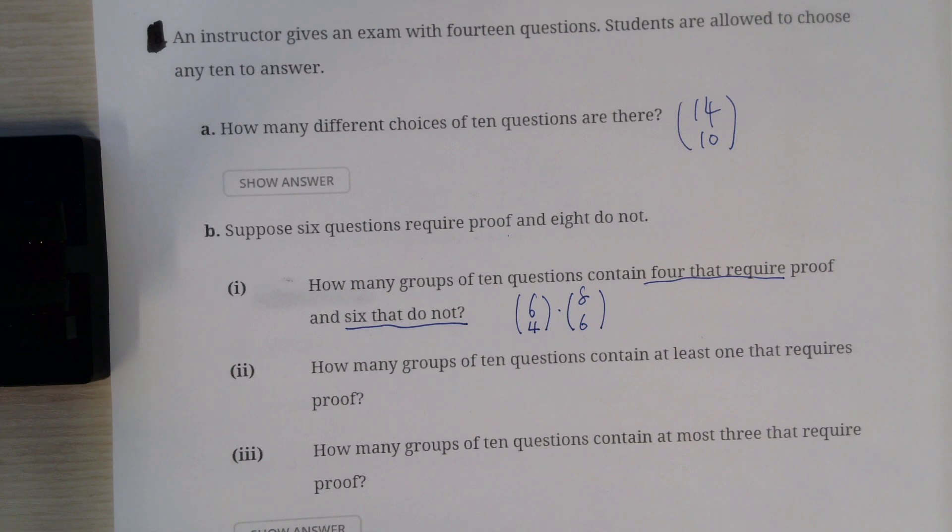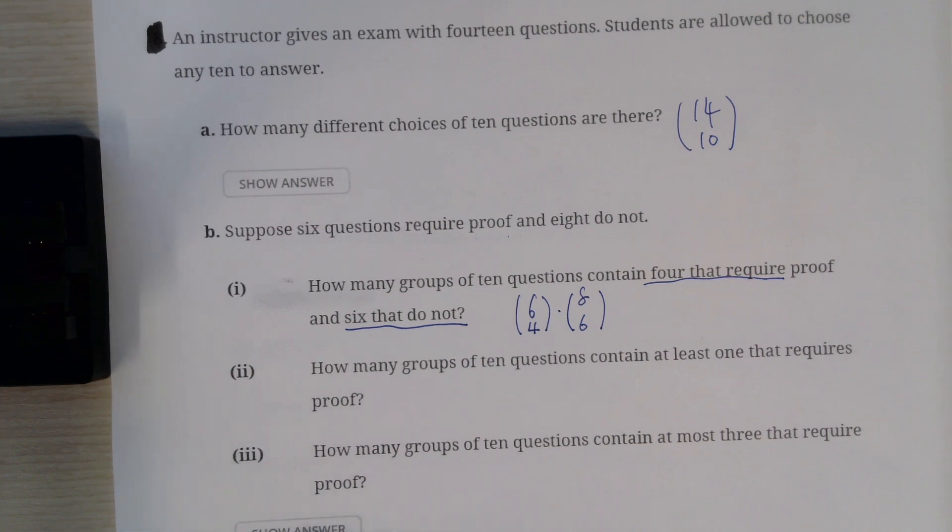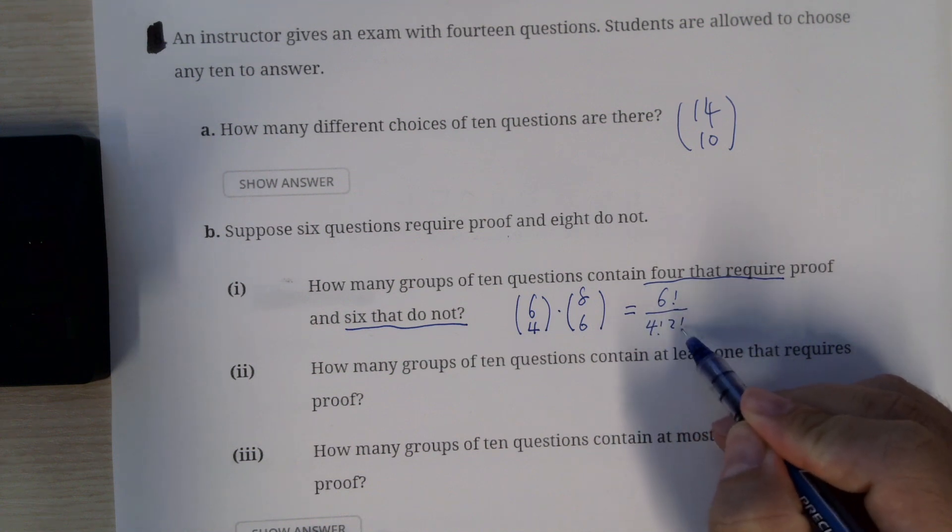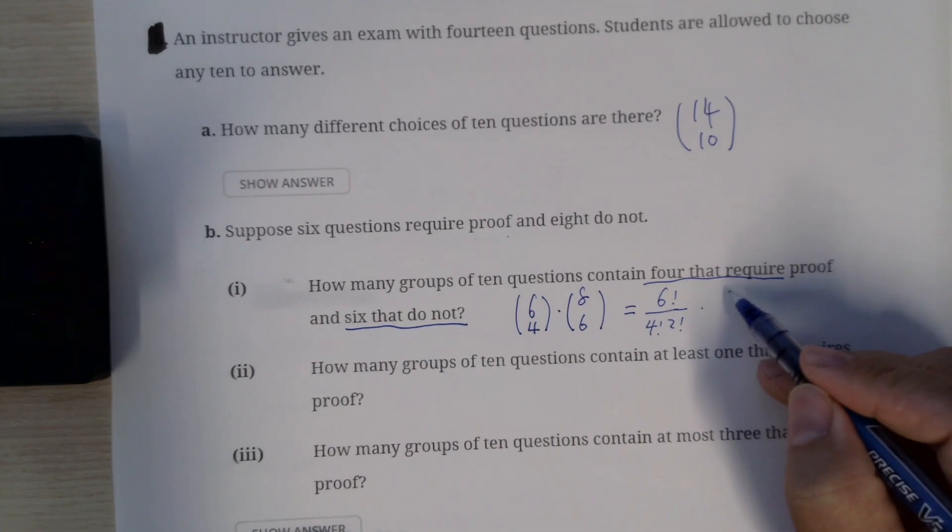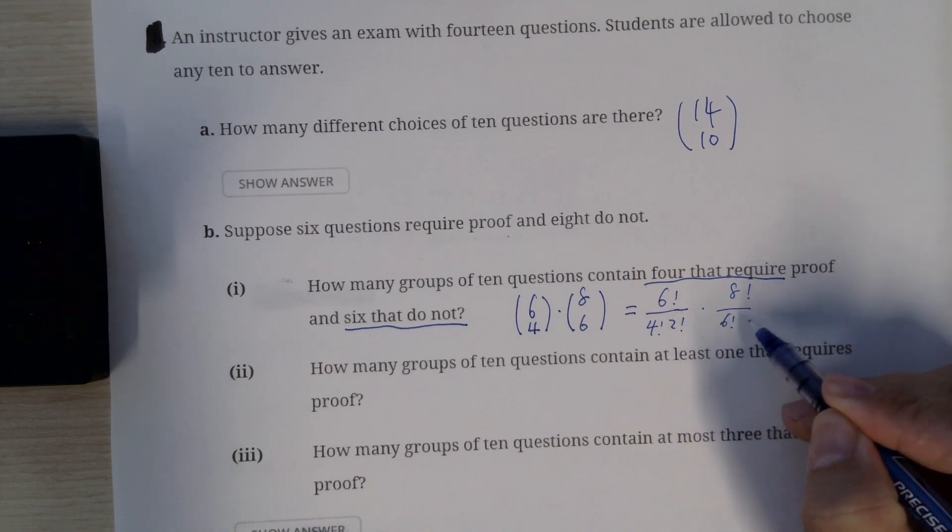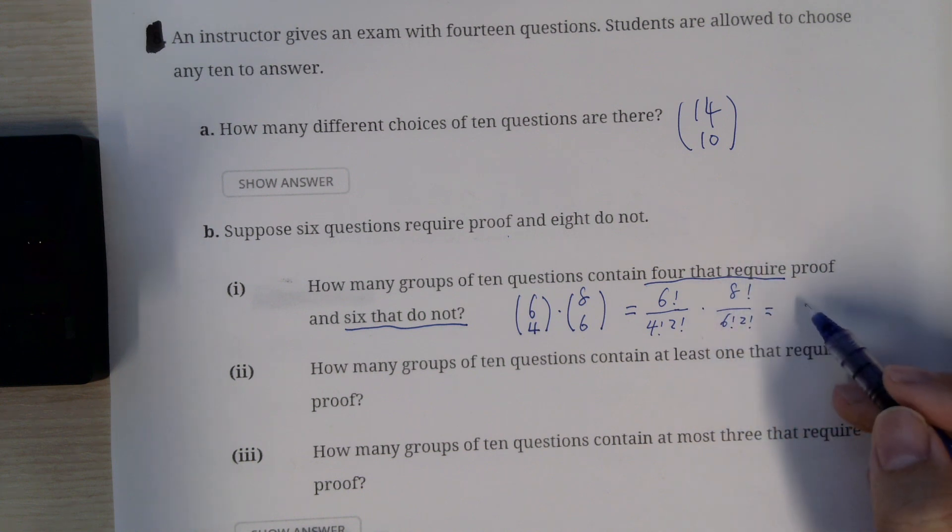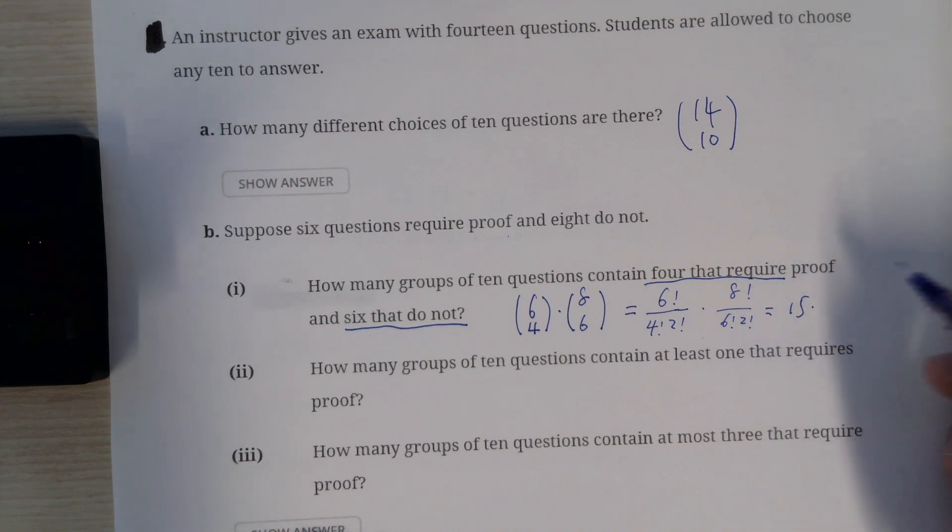And turns out if you do the calculation here, 6 factorial over 4 factorial times 2 factorial, times 8 factorial over 6 factorial times 2 factorial. So that will give you 15 times 28.